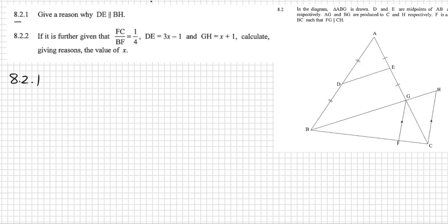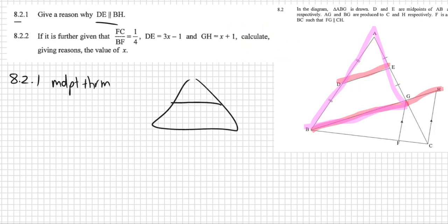8.2.1 wants to know why DE is going to be parallel to BH. Well, BH is all the way there, but we're going to look at it at triangle ABG. So the answer is it's the midpoint theorem. The midpoint theorem states that if we have a triangle and D and E here split, so if D splits AB in half and E splits AC in half, if that's true, we have two triangles, then the bottom line will be double the size of the middle line, double the length. And it will also be true that they will be parallel. So it's a case of midpoint theorem.